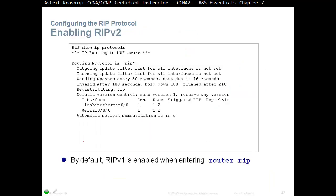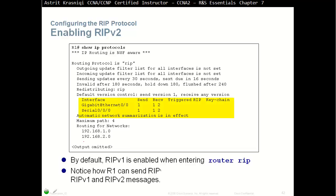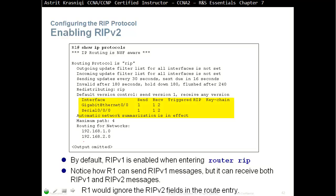Running show IP protocols again, we can see that we are sending version 1 but receiving version 1 and version 2. Notice how Router 1 can send RIP version 1 messages but can receive both RIP version 1 and RIP version 2. RIP will ignore the RIP version 2 fields in the route entry — it will ignore anything like subnet masks that it doesn't understand.